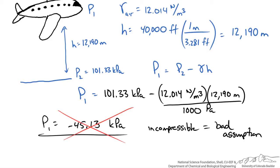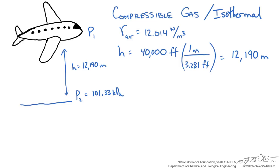So let's take a look at the case where we assume that the gas is compressible, but also that there is no change in temperature from sea level to our height of 40,000 feet. So in this case we are keeping the variables the same. The only real difference is the equation we are using.